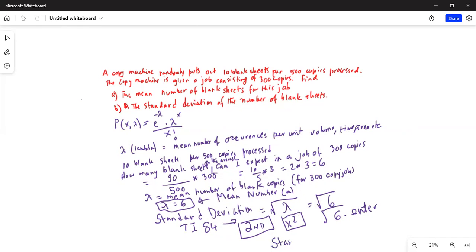Then standard deviation, the square root of 6 equal to 2.45.